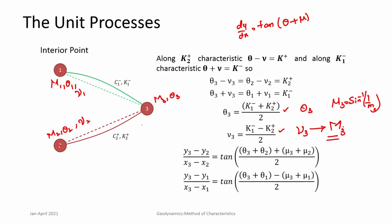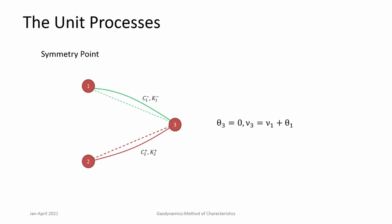Through this process we obtain x3, y3, m3, theta3, nu3, and mu3. At point 3 we can then define k plus and k minus, and this process can be taken forward to the next set of points.